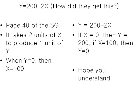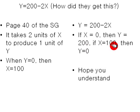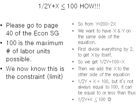So let's break this down. Page 40 of the study guide tells us it takes two units of X to produce one unit of Y. In other words, to produce one unit of Y, there's an opportunity cost of two units of X. So Y equals 200 minus 2X. If X equals 0, then Y equals 200. Then if X equals 100, then Y equals 0.